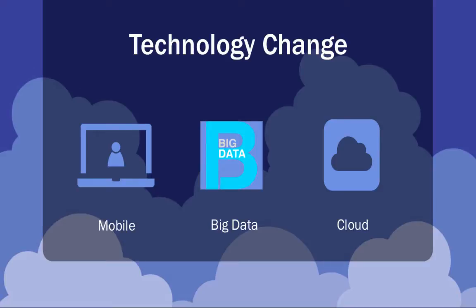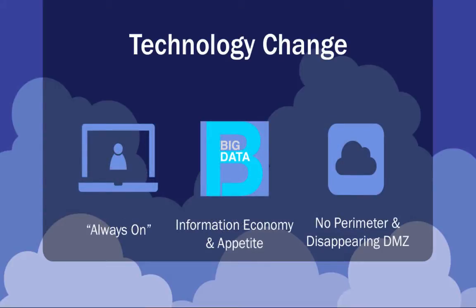The three main areas of technology change that most of you are familiar with are mobility, big data, and the cloud. Mobility is about always on — connecting on any device, anywhere, at any time. Work is not a place anymore; it's something you do. You don't really hear employees say, 'I'll get around to that when I get in front of my computer at work.' It's about getting the job done in the most frictionless way possible.